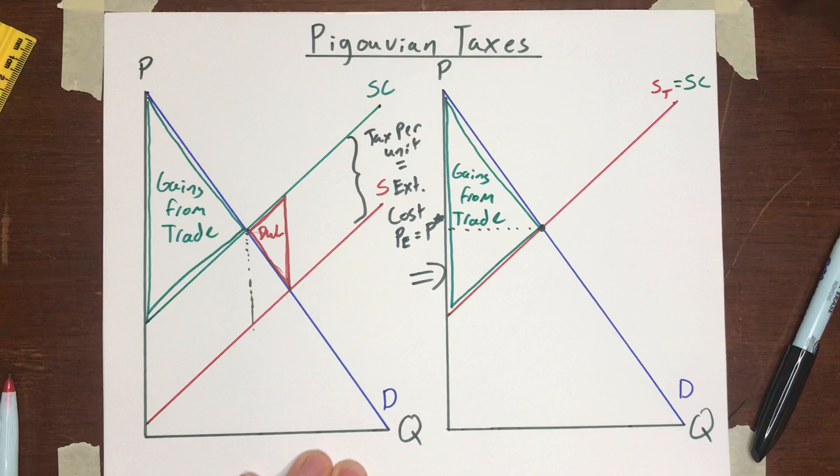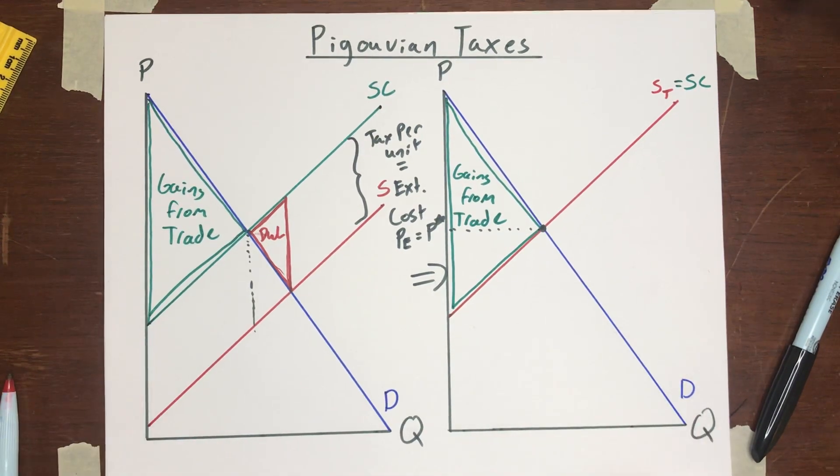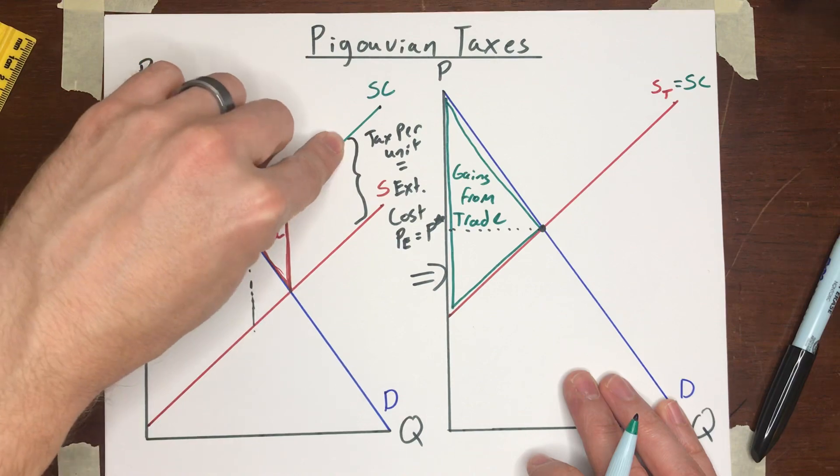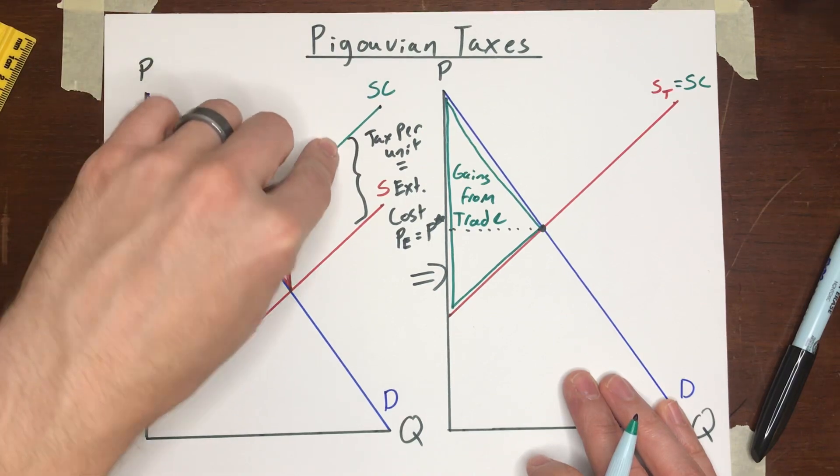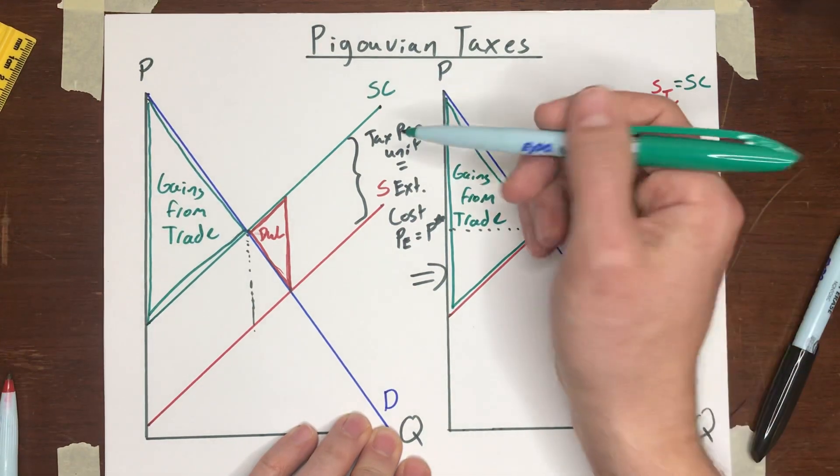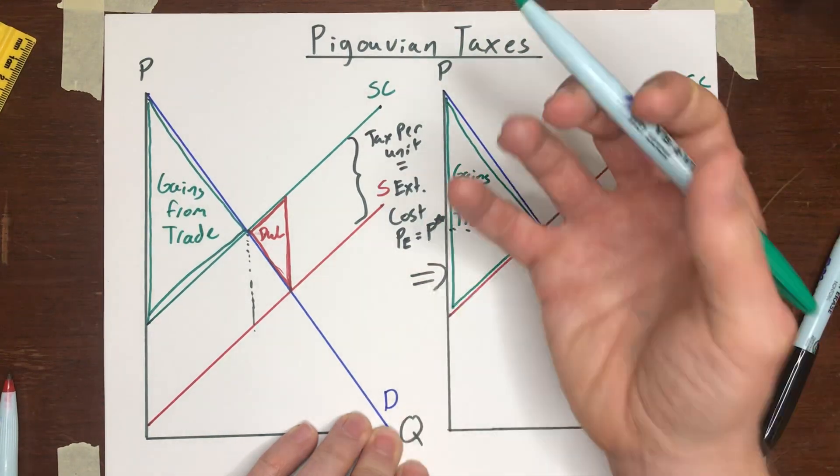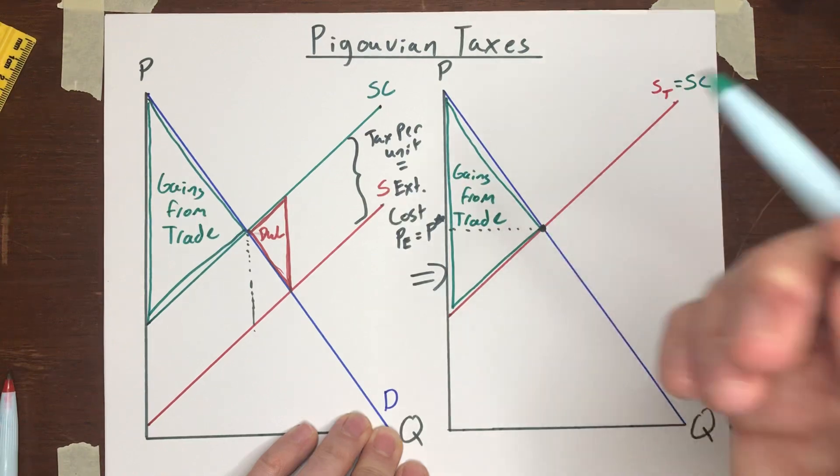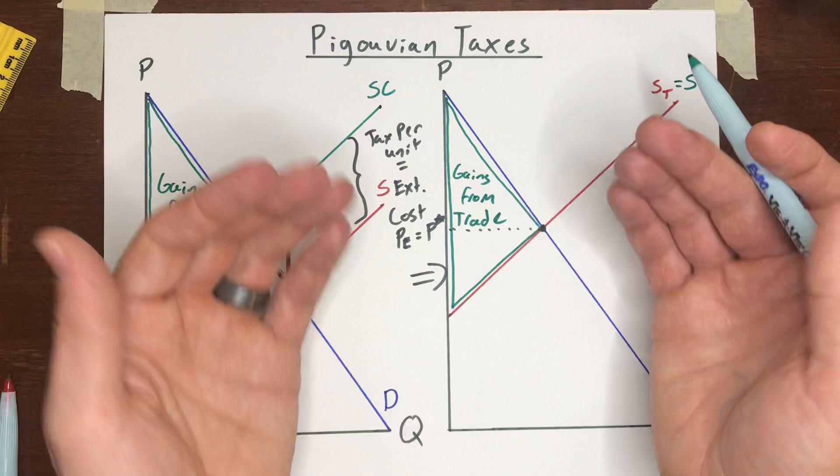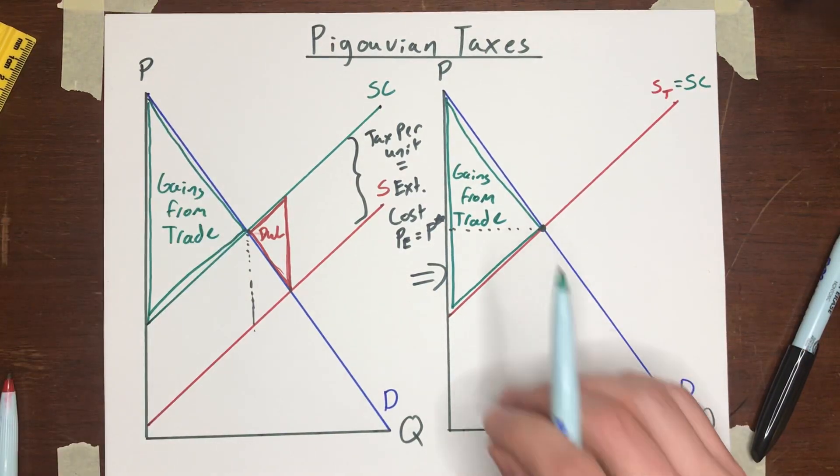So we have done the best that we can. The nice thing about a Pigouvian tax is it's very simple. It's very straightforward. All it requires the government to do is figure out what is that external cost. And then the government just has to levy the tax and collect that tax. And the market takes care of itself because what that tax does is it forces the seller to internalize that external cost. Every time they produce a unit, they have to behave as though the cost they're imposing on other people is a cost that they themselves have to pay because they do have to pay it. They have to pay the tax to the government.